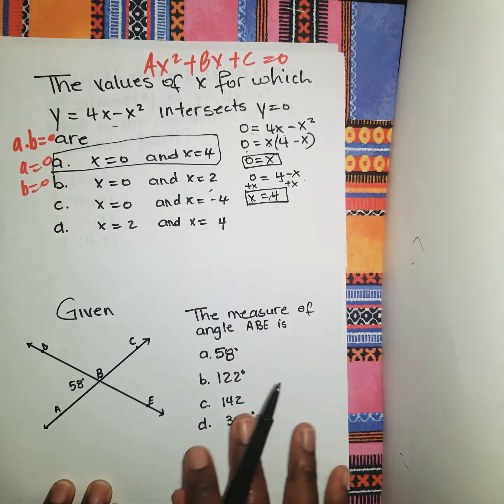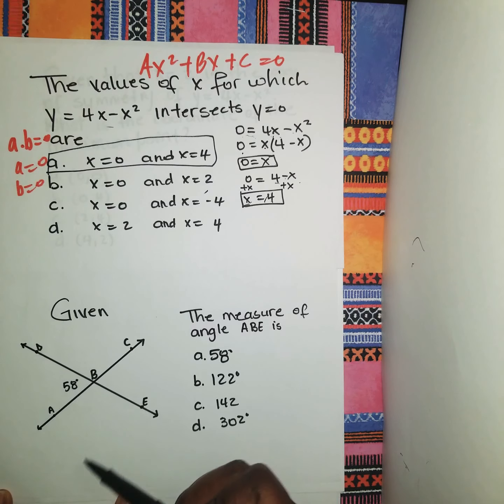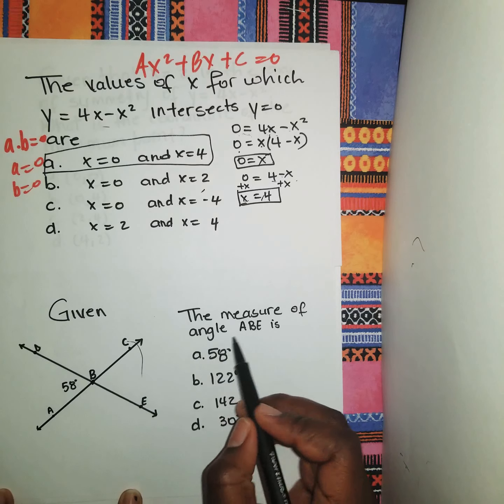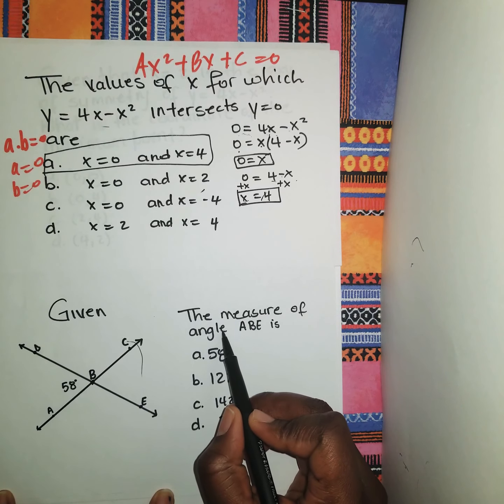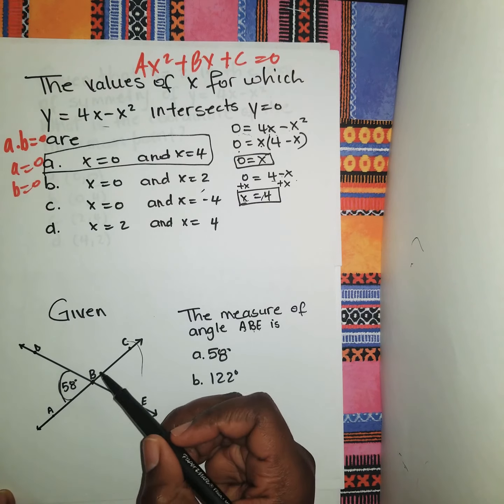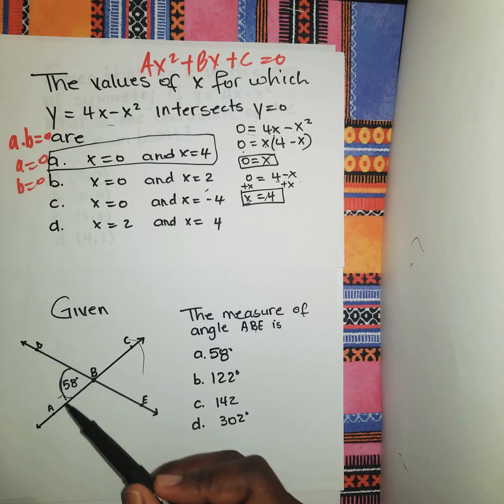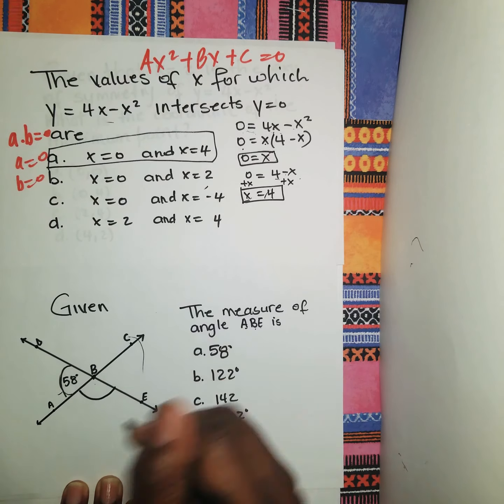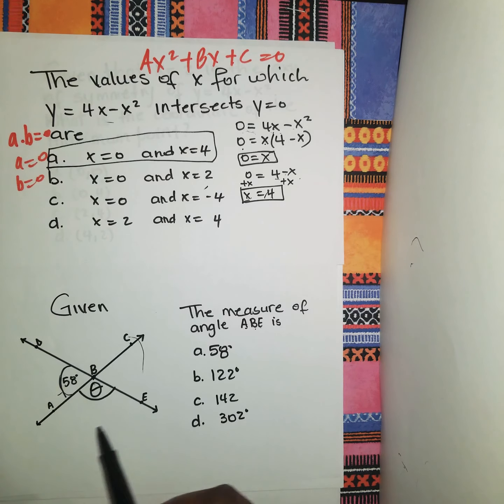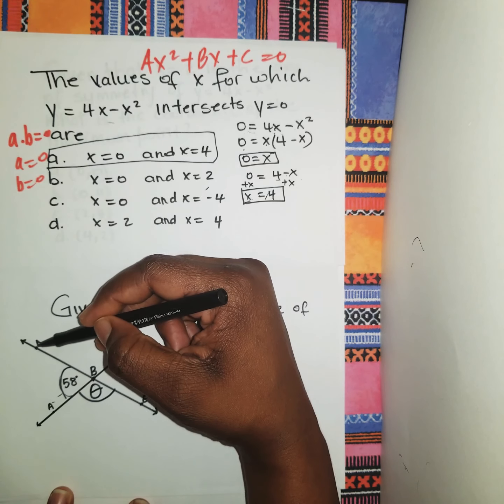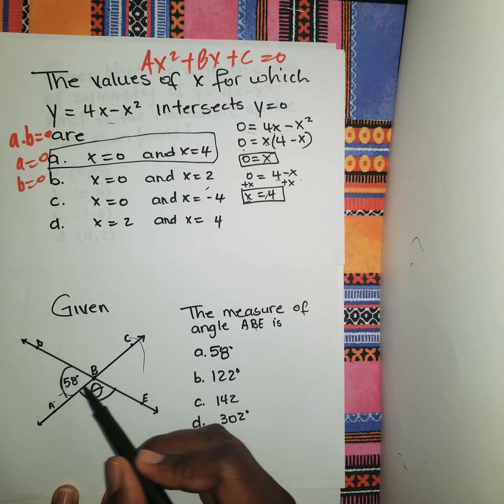Let's try another question. We're given this figure or diagram, and it says find the measure of angle ABE. We're given angle ABD to be 58°, and we have to find angle ABE, which is this angle here. One thing we need to know is which angle property to use here. The angles on a straight line add up to 180°.